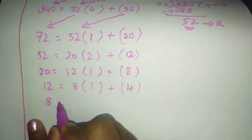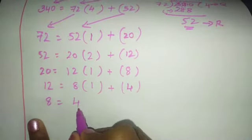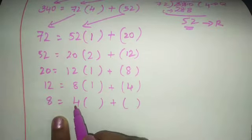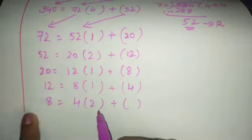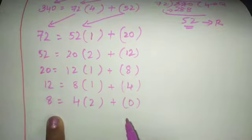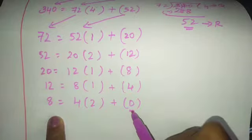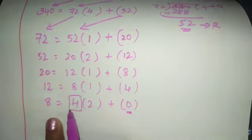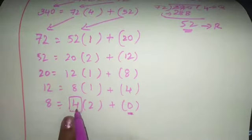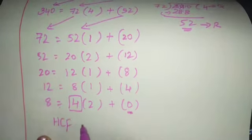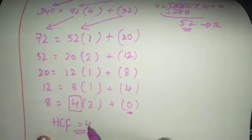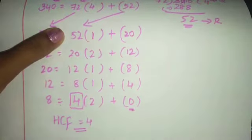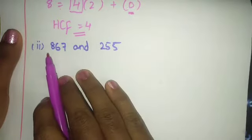Now take 8 = 4 × 2 + 0. 4 × 2 is 8, and 8 minus 8 is 0. Once you get remainder 0, you stop. The number next to the equal sign is your HCF. So HCF is 4.